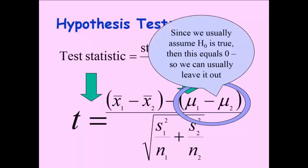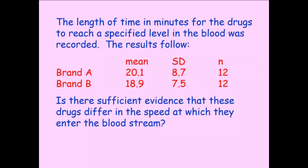Just a word of note, in a two-sample inference process, we're usually assuming that μ one is equal to μ two. So that whole term we can usually cross out because it happens to equal zero. Okay, so going back to our medicine example, is there sufficient evidence that the drugs differ in the speed at which they enter the bloodstream?